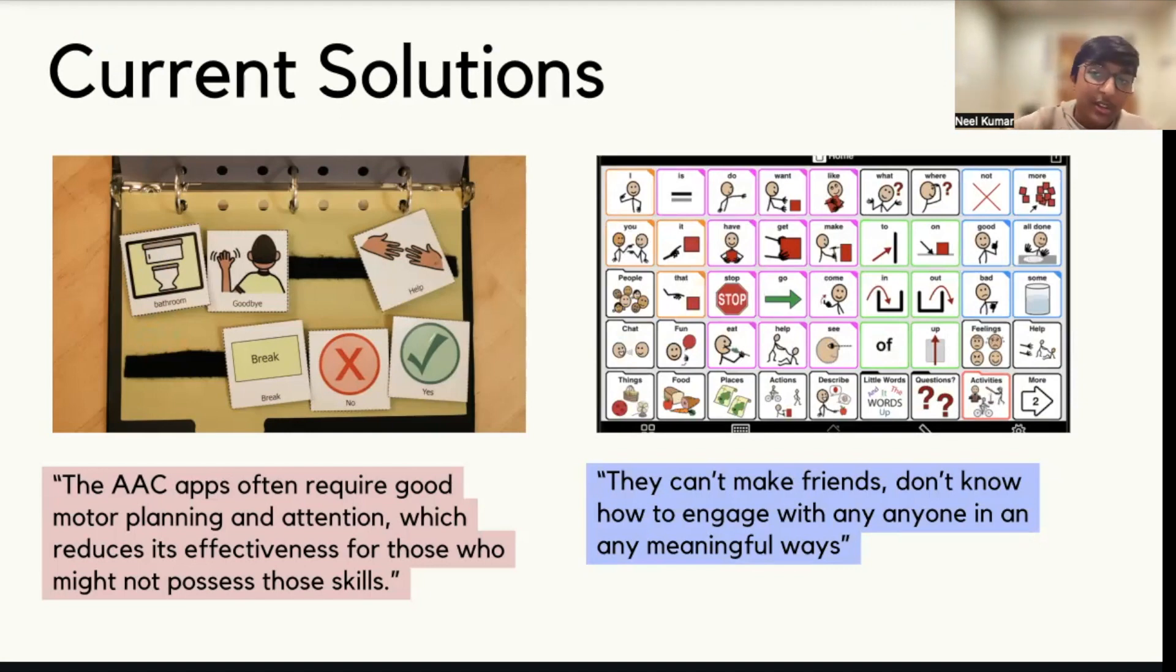In order to include all the things someone would want to say, there are folders on some of these buttons which create nested screens. Even for a neurotypical person, this is complicated to navigate, and especially for someone who has ASD who doesn't have the greatest motor planning and attention, this makes the problem even worse.